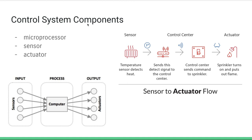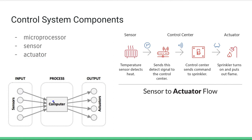Broadly speaking, in a control system there are three specific components: the sensor, the microprocessor, and the actuator. The sensor feeds data into the microprocessor based on the environment around it. The microprocessor processes that data and feeds a new signal to the actuators, which actually take action based on the input.